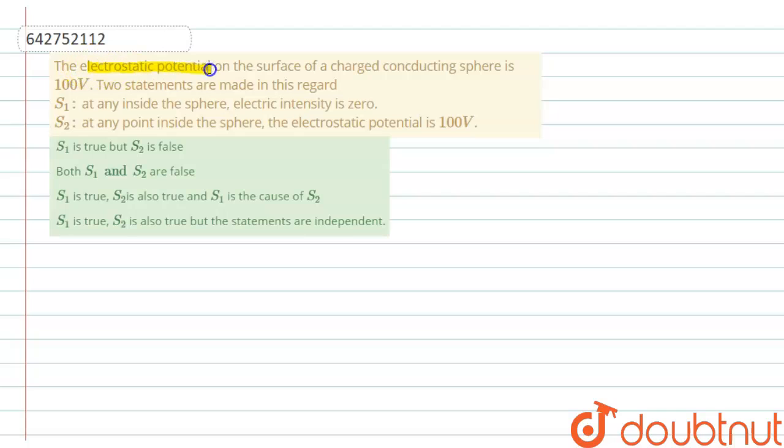The electrostatic potential on the surface of a charged conducting sphere is 100V. Two statements are made in this regard. First statement,